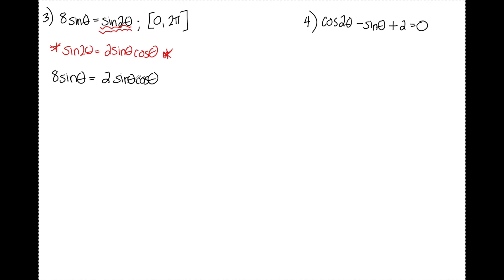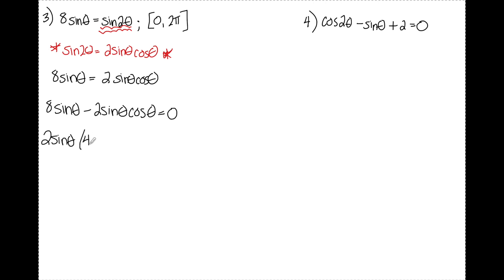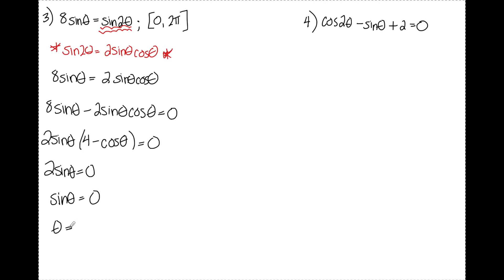From here I'll set the equation equal to 0 so I can start factoring. Subtracting the 2 sine theta cosine theta over, I can now see a GCF of 2 sine theta. Factoring out 2 sine theta, I'm left with 4 minus cosine theta. Setting the left factor equal to zero: 2 sine theta equals 0, so sine theta equals 0, which occurs at 0, π, and 2π.